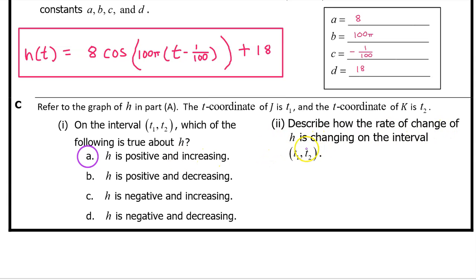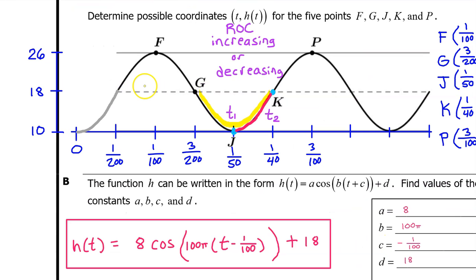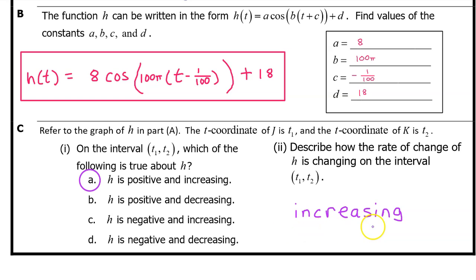Describe how the rate of change of h is changing on the interval from t1 to t2. Wherever h(t) is concave up, the rate of change is increasing; wherever concave down, the rate of change is decreasing. On the interval from t1 to t2, h(t) is concave up, so the rate of change is increasing. Since reasoning is not required, the answer is simply: increasing.